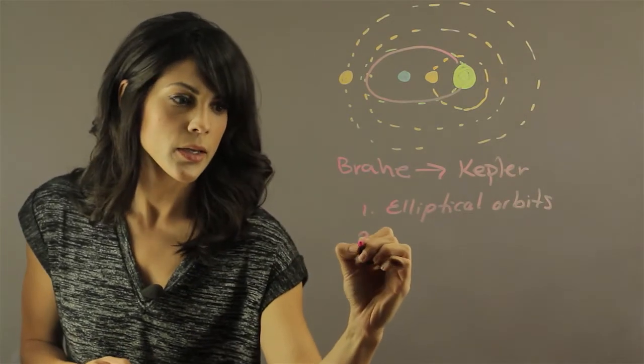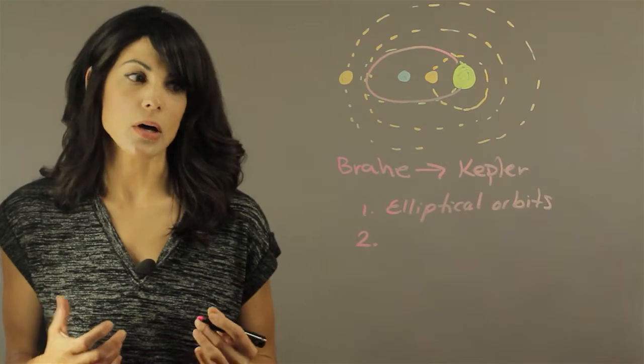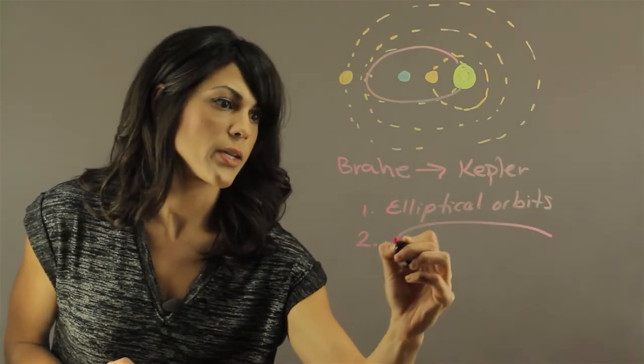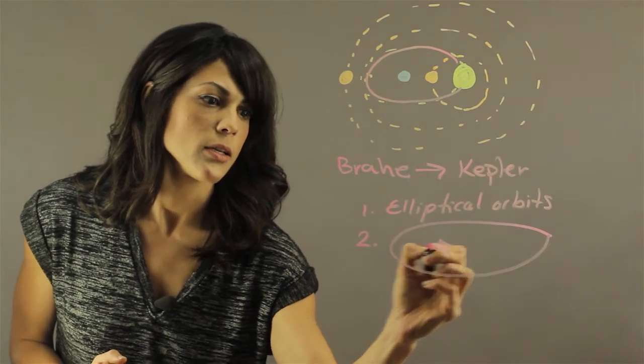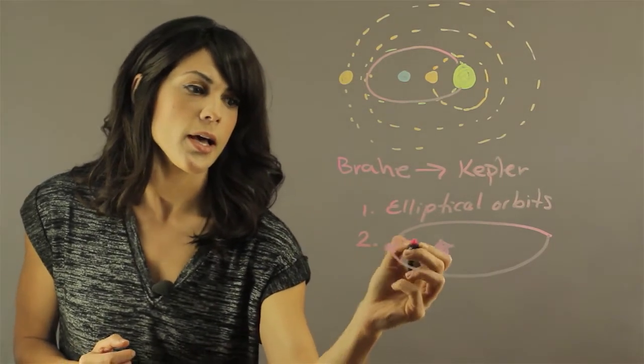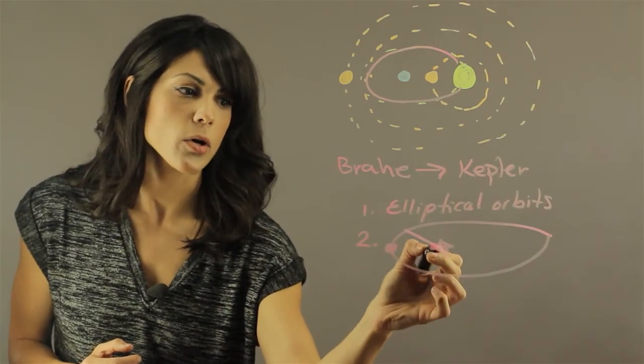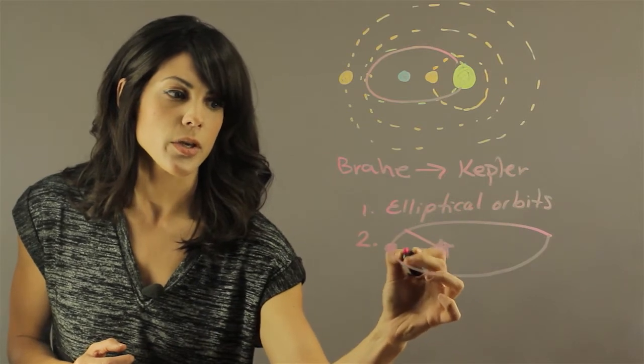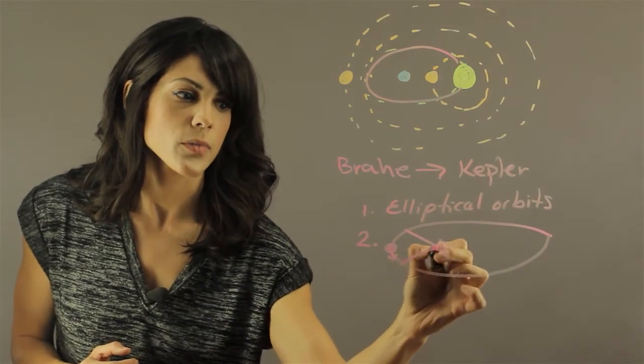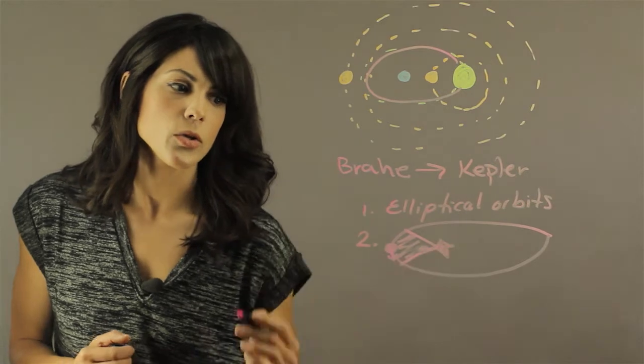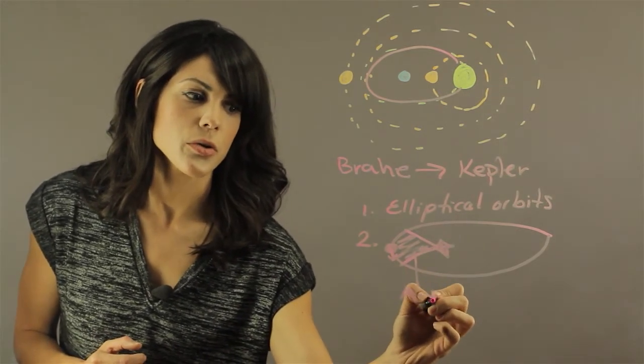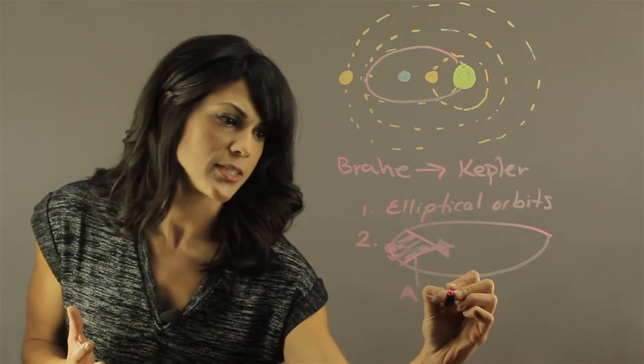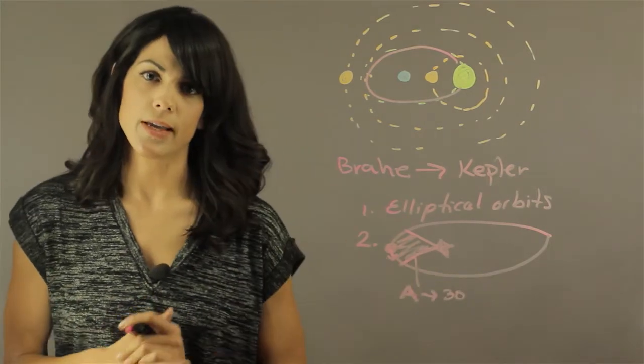The second one is the Equal Area Law, and that's quite interesting. He was looking at—let's say here's the Sun, here's the Earth. Let's say you timed how long it takes to go from here to here. The Earth is traveling, and you look at this area. Let's say it took 30 days to cover that area.